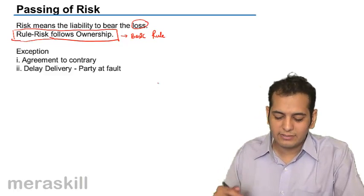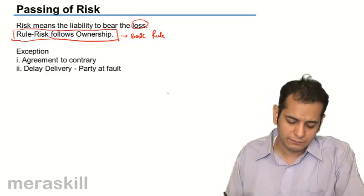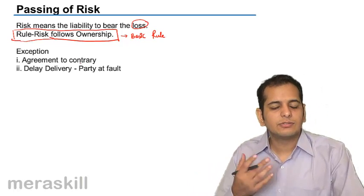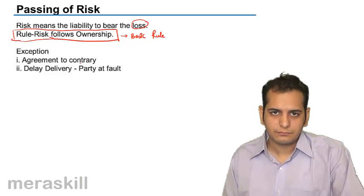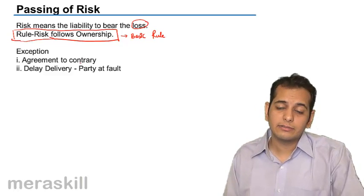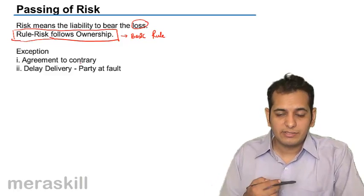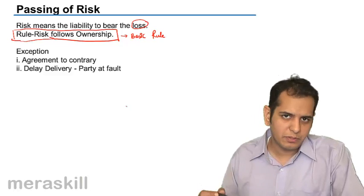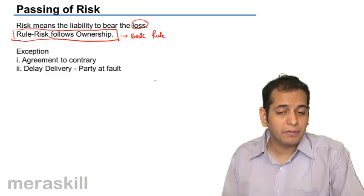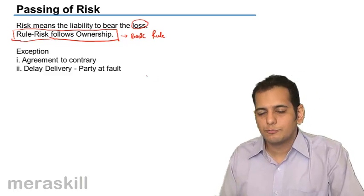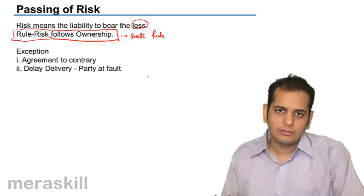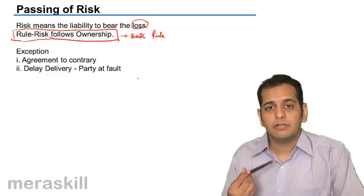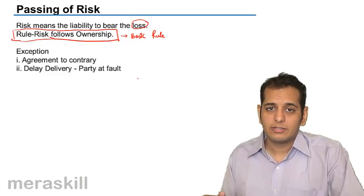There are some exceptions to this general rule. The exceptions may be when a contrary thing is mentioned in the contract. For example, I sell you the pen. You pay me the price, I give you the pen. But in the contract, you tell me that I as the seller will be liable for the pen for the next 10 days.